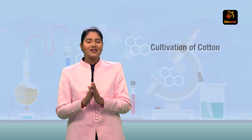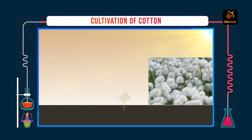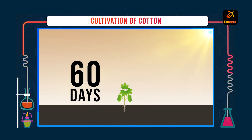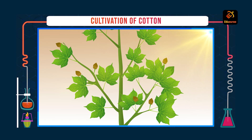Cotton crop is generally sown during early spring, that is the duration from March to June. The plants of cotton are bushy and 1 to 2 meters tall. They take around 60 days to start flowering.